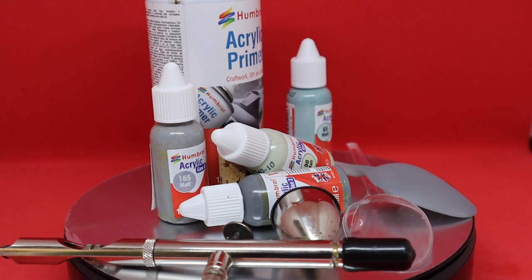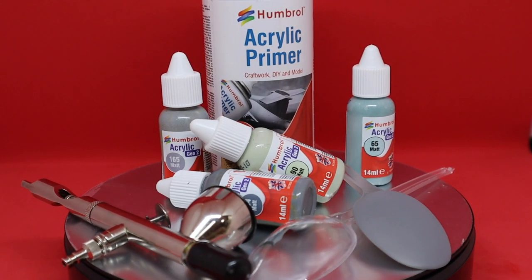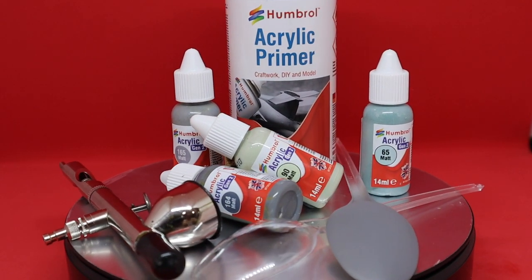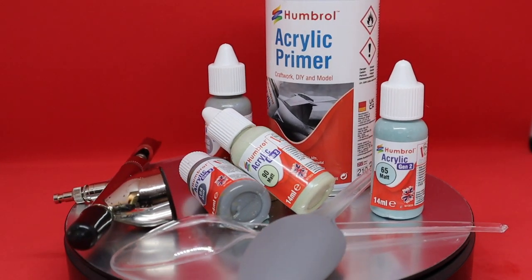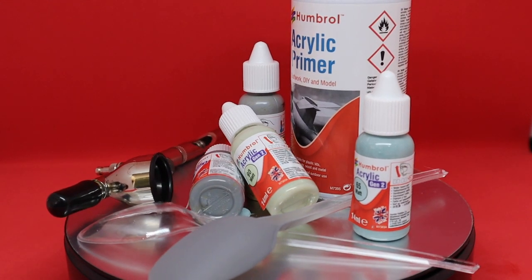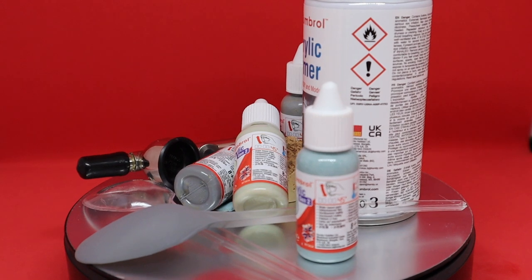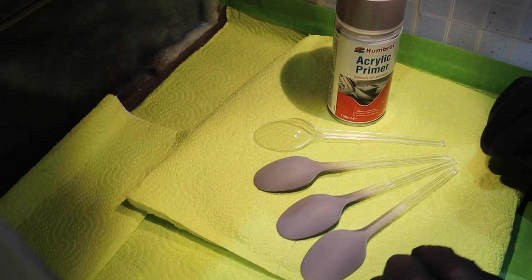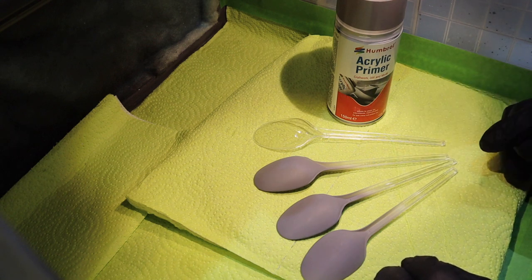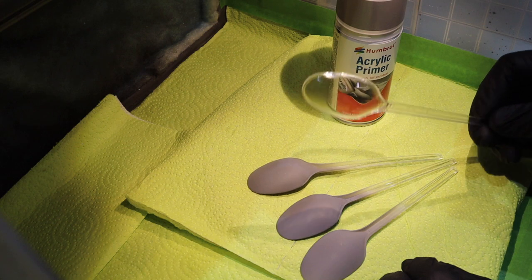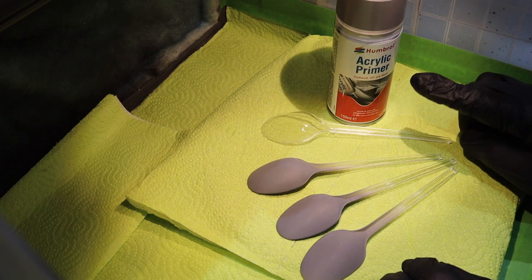So of course, the first thing to do is primer. As you can see here, we have the Humbrol range in which we're going to be using, and I wanted to make sure that everything within this paint test was fair to Humbrol, so we used everything which they provided to keep the Humbrol theme throughout the video. So over to the spray booth, and part of the test we're going to do now is paint some plastic spoons using the Humbrol Acrylic Primer that you can see there.